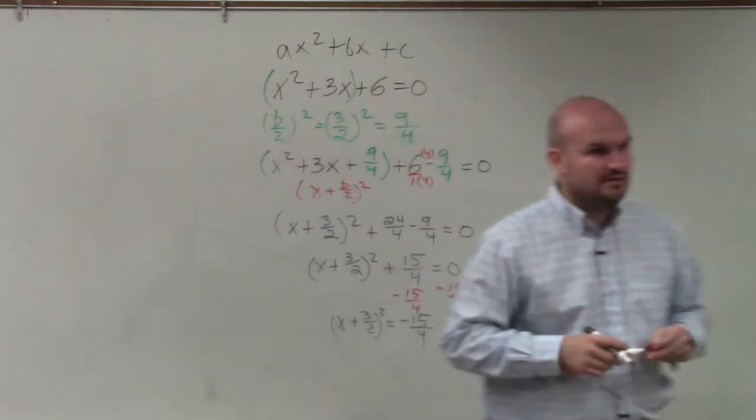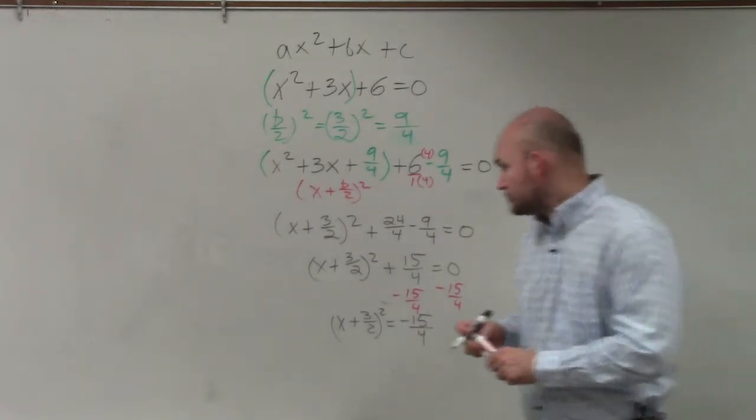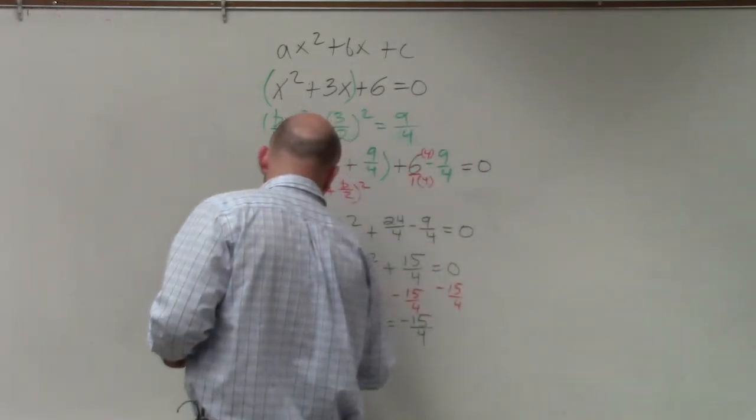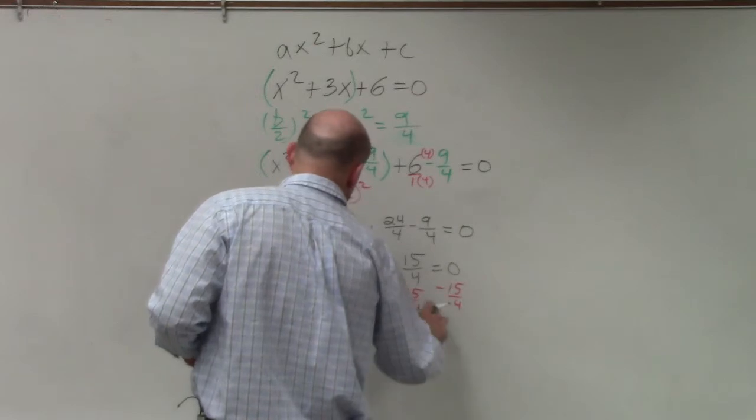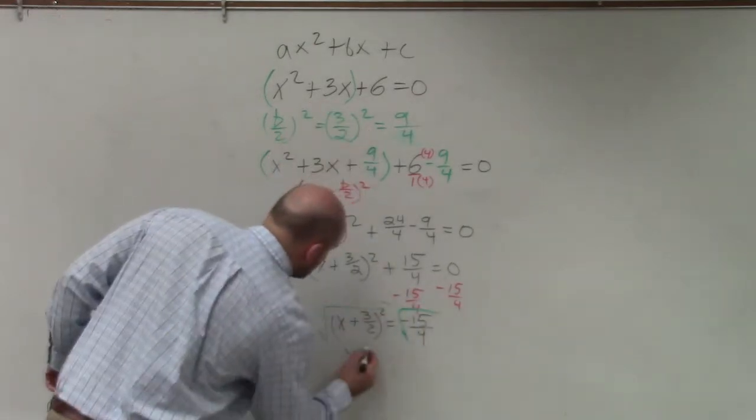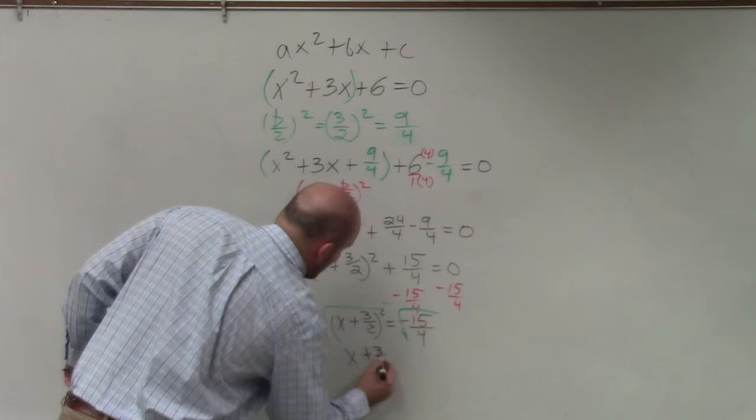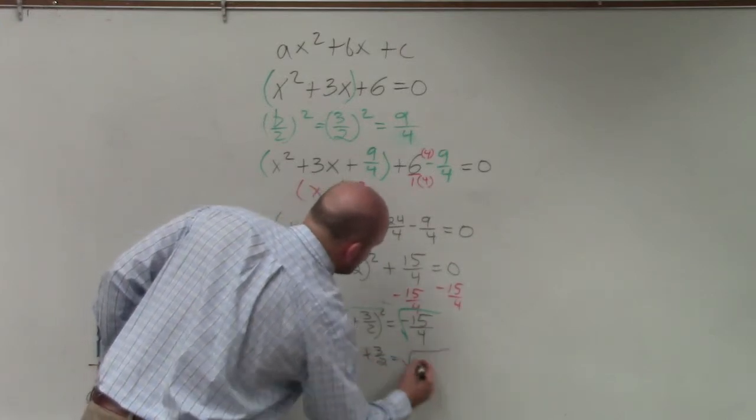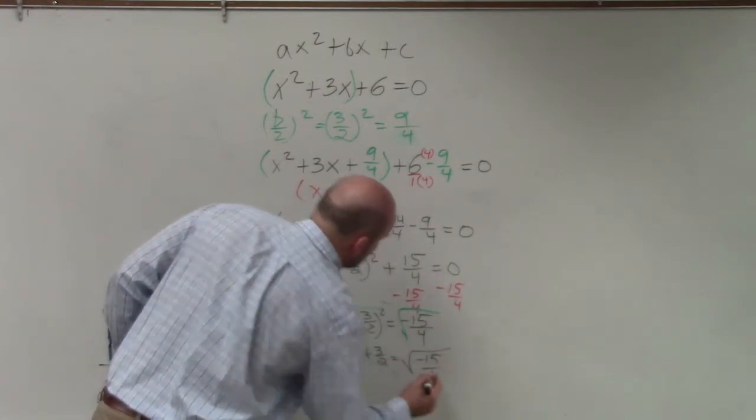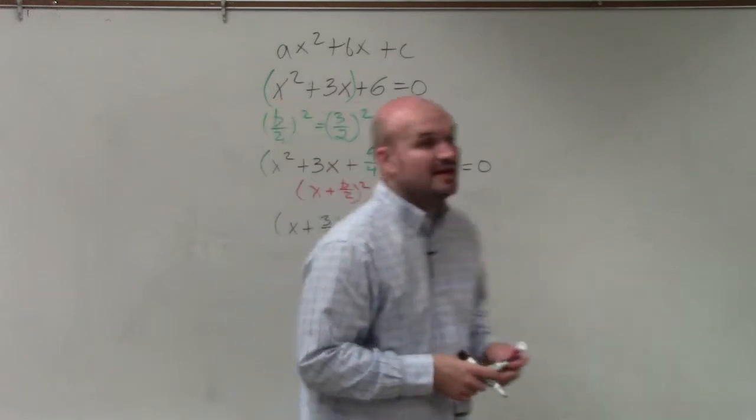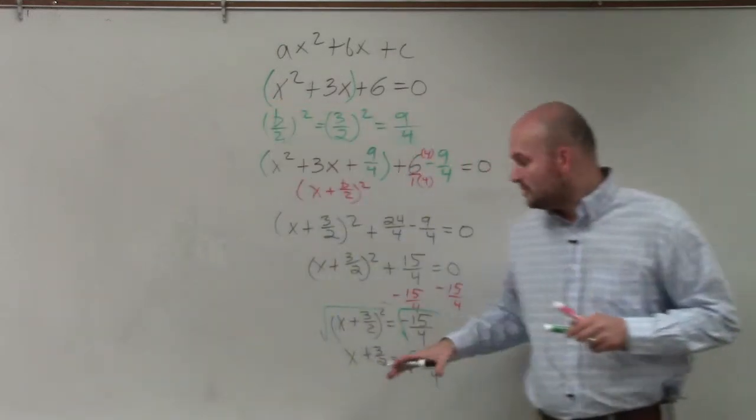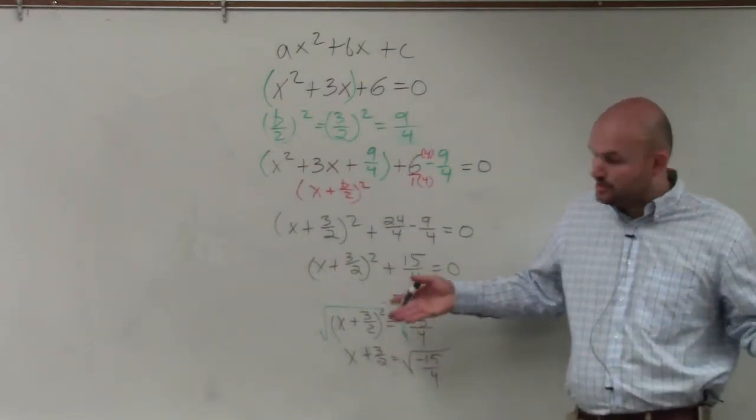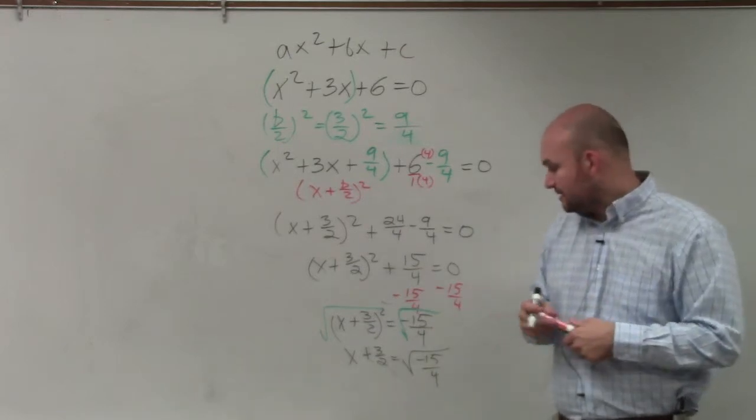Does everybody see what I did there? Now we just need to undo the square root, undo squaring. So I take the square root, and I get x plus 3 halves equals the square root of negative 15 over 4. You cannot take the square root of a negative number. But I will get to, we haven't learned this yet. So just leaving your answer like this would be work.